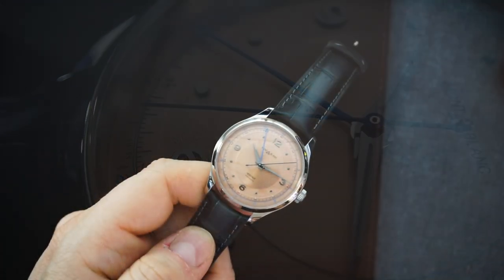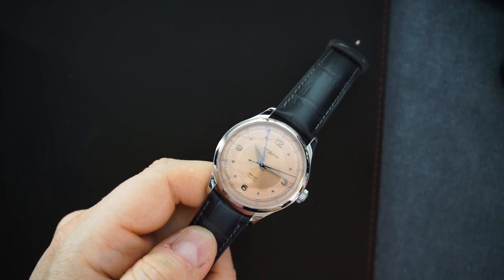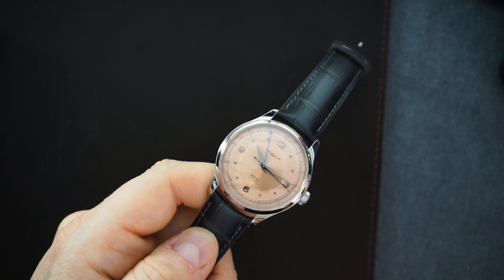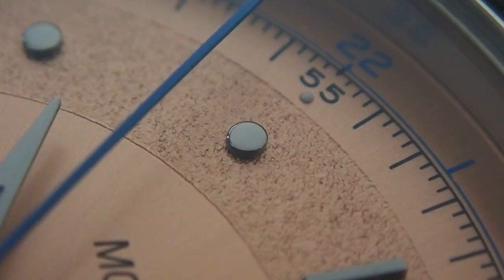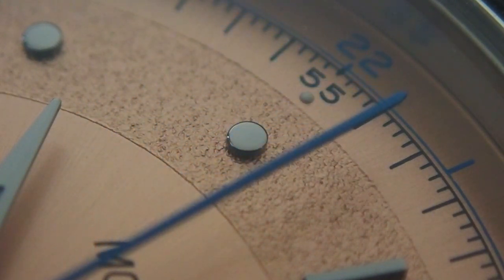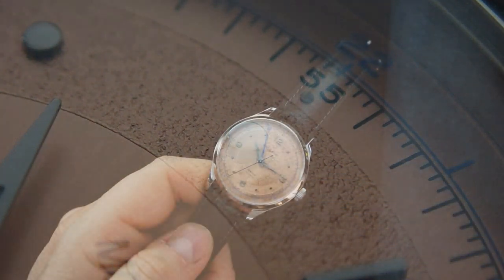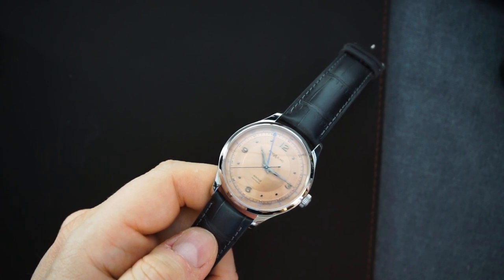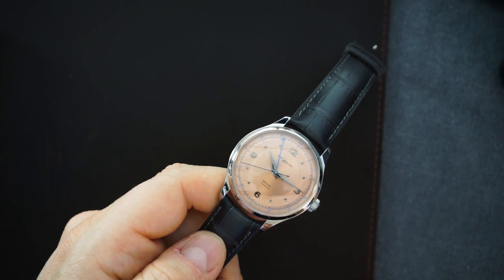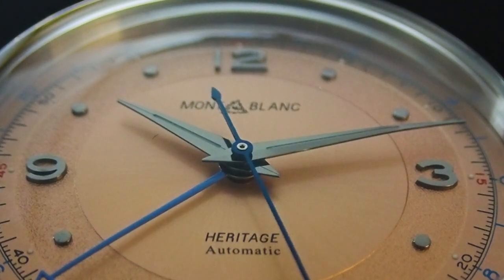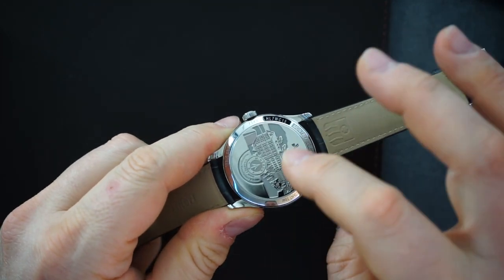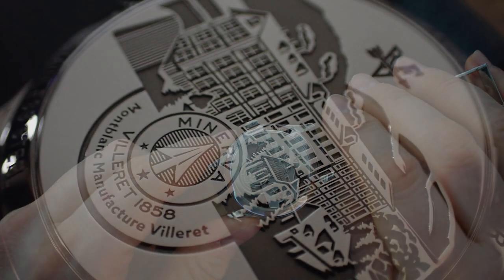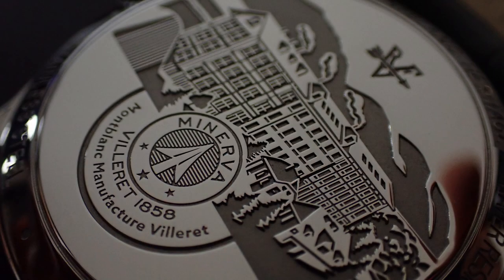This is inspired by Minerva. Richemont, the parent company for Montblanc, bought Minerva and gave them to Montblanc. For their heritage collection of watches they go into the Minerva folder of watches from their past. Minerva is a very storied, very historic brand, especially of chronographs with a really great history. Montblanc is recreating those with the Montblanc logo on it, using their vintage logo created for their Minerva watches. On the case back you're getting a beautiful engraving of the Minerva factory.